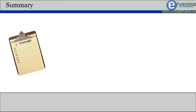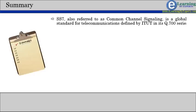To summarize, Signaling System No. 7 or SS7 in short is a global standard for telecommunications defined by the International Telecommunication Union Telecommunication Standardization Sector or ITUT in its Q700 series.